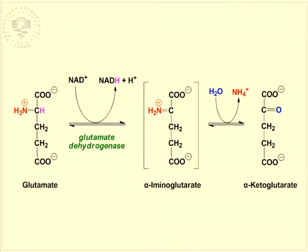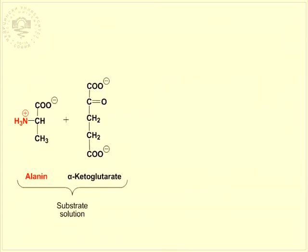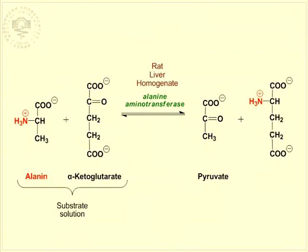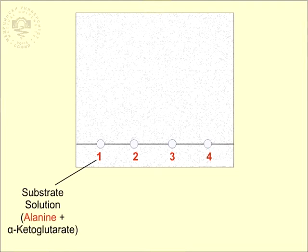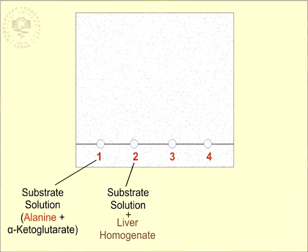The next experiment demonstrates how to prove the occurrence of transamination. A solution containing the substrates alanine and alpha-ketoglutarate is incubated with rat liver homogenate containing the enzyme alanine aminotransferase. The formation of the new amino acid glutamate is proven by partition paper chromatography. The samples are spotted onto points along the starting line on a sheet of chromatographic paper. The substrate solution containing alanine and alpha-ketoglutarate is spotted onto the first point. A drop of the incubation mixture is applied to the second point. In this incubation mixture, the liver alanine aminotransferase has catalyzed transamination between alanine and alpha-ketoglutarate, yielding glutamate and pyruvate.